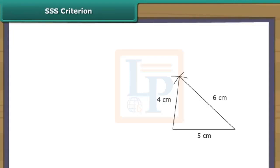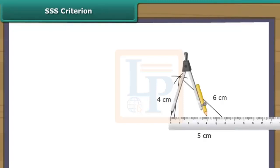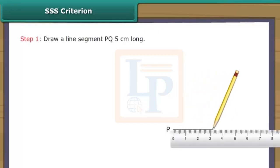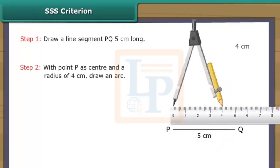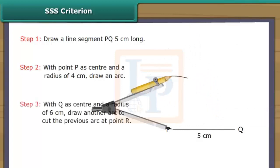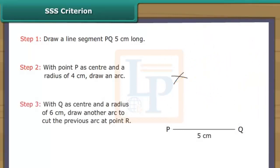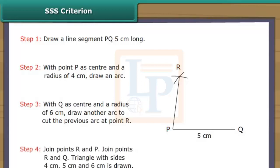SSS criterion: Let us draw a triangle whose three sides measure 4 cm, 5 cm and 6 cm with the help of a ruler and a compass. Draw a line segment PQ 5 cm long. With point P as center and a radius of 4 cm, draw an arc. With Q as center and a radius of 6 cm, draw another arc to cut the previous arc at point R. Join points R and P, then join points R and Q. The triangle with sides 4 cm, 5 cm and 6 cm is drawn.